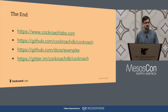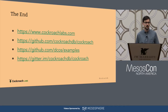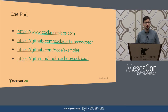That's pretty much it. Here are some links for where you can find out more. Our main website is cockroachlabs.com. All of our source code is on GitHub at cockroachdb/cockroach. If you want instructions for running CockroachDB on DCOS, the best document is currently at github.com/dcos/examples — there's a link on that page for CockroachDB. We're also active on Gitter chat if you want to come chat with us in real time.